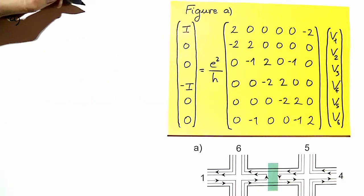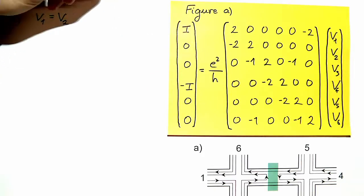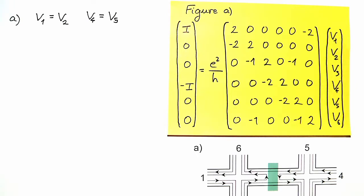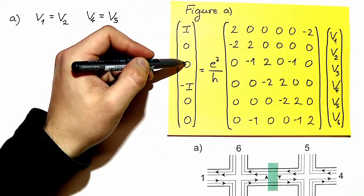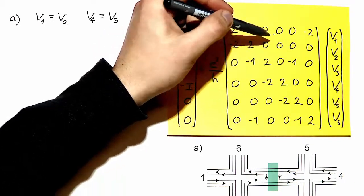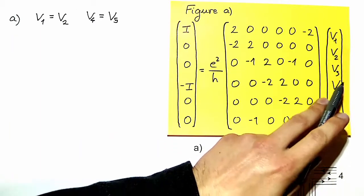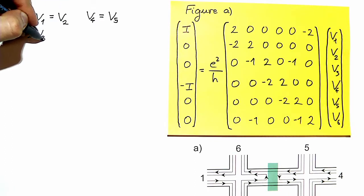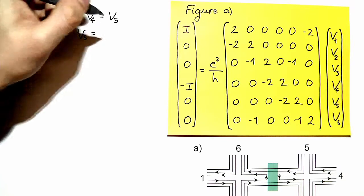So for case A we have v1 equal to v2, and similarly v4 and v5 are equal. From row number 3, the result is that 0 equals minus v2 plus 2v3 minus v5, and the same with v6 replacing v3. So we write 2v3 equal to v2 plus v5, and this is also equal to 2v6.